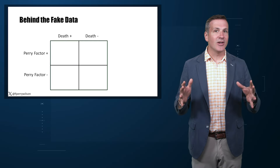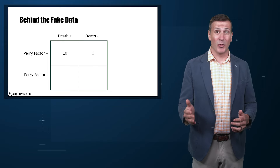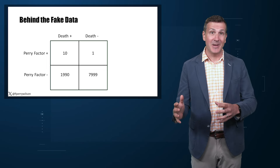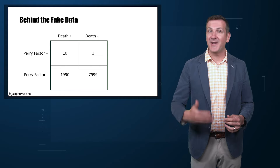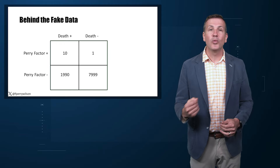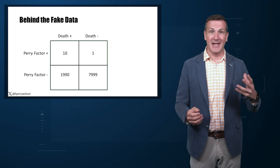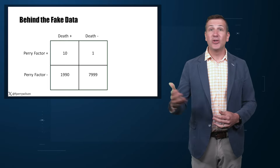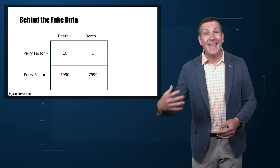I constructed my fake PERI factor dataset quite carefully to illustrate this point. What you see here is a breakdown of the patients in my fake study. Just 11 of them were PERI factor positive, but 10 of those 11 ended up dying. It really does appear that if you have the PERI factor, your risk of death is much higher. But the reason that PERI factor is a bad predictor is because it's so rare in the population. You can use it to correctly predict the outcome of 10 of the 11 people who have it, but the vast majority of people don't have the PERI factor — it's useless to distinguish who will die versus who will live in that population.